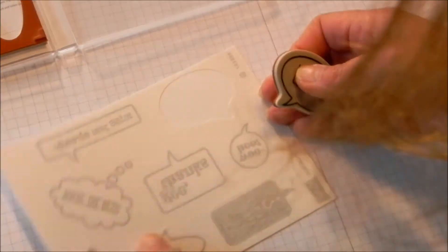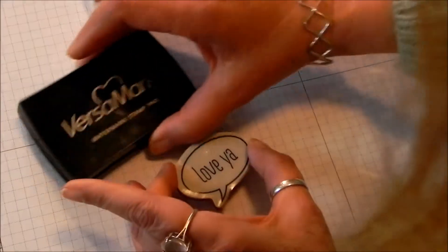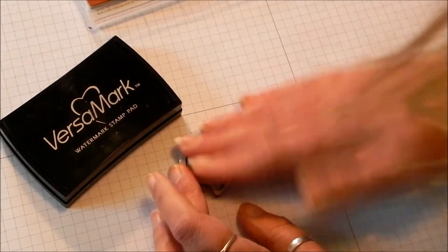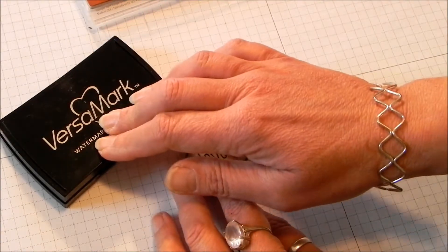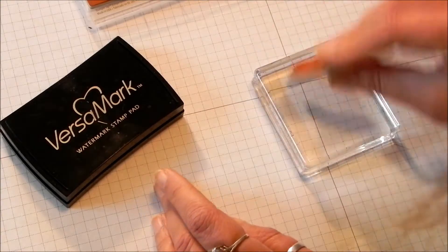Now here is the good part. If you've ever had trouble, I know I do. If you're stamping with ink, not a big deal. But sometimes when you're using Versamark, because it's a little bit more sticky, you take your acrylic block and stick this on here.